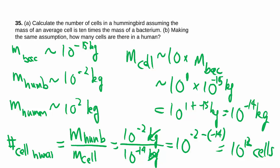For the human we change these from the hummingbird to the human. That makes a positive 2, so 2 minus negative 14 gives us 10 to the 16th.